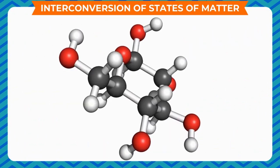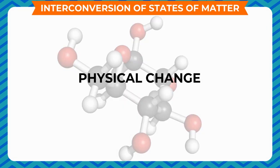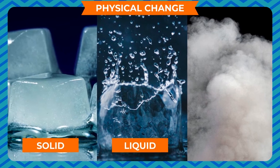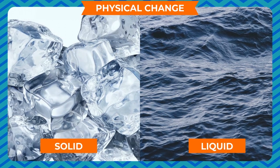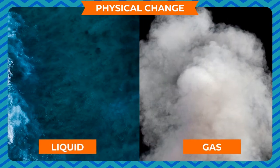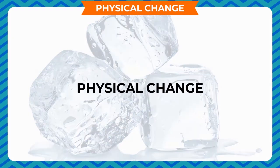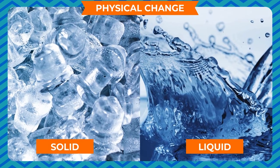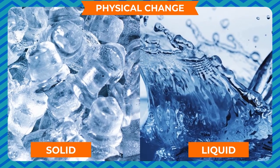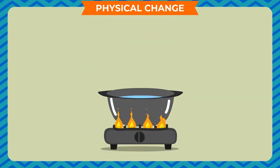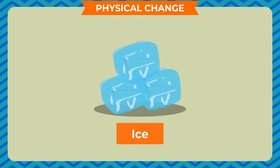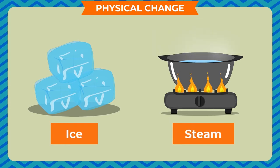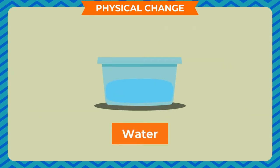These changes are categorized into two types: physical change and chemical change. In a physical change, there is only a change in the state of matter without forming a new substance. This conversion is reversible and temporary. For example, water on heating converts into steam, and on cooling converts into ice. If ice is heated it converts back into water, so we get water back in its original form.